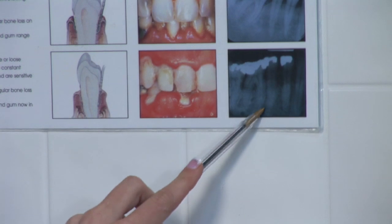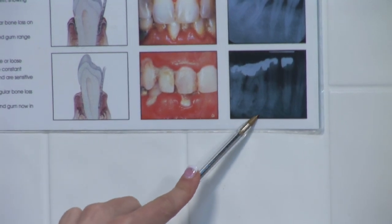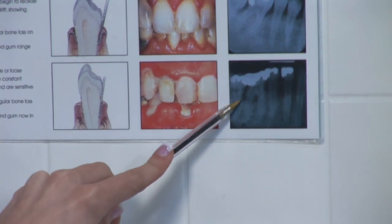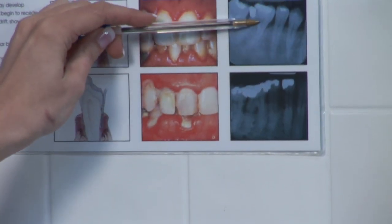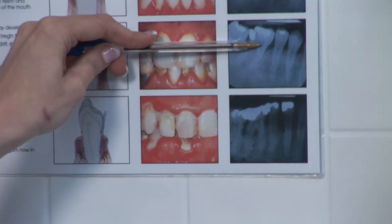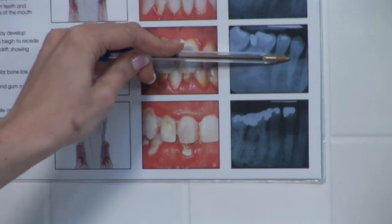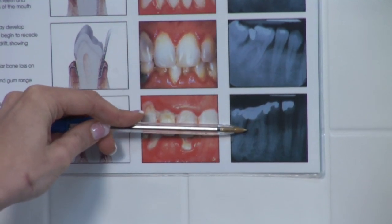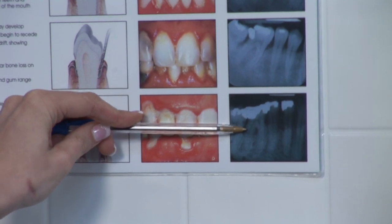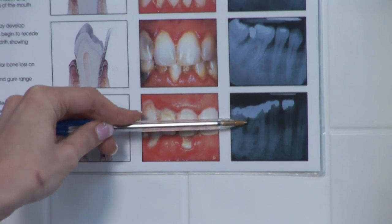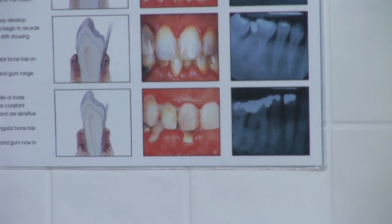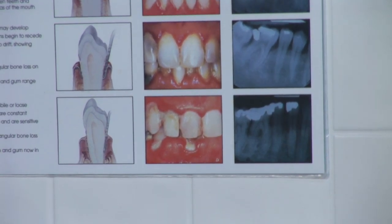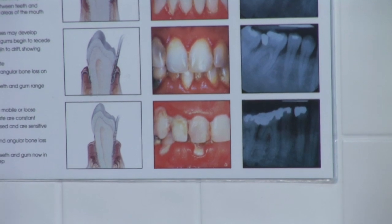From this x-ray over here you can actually see there is severe bone loss. With moderate periodontitis the bone level has receded, but with advanced periodontitis you're losing severe bone. If you don't have enough bone to hold your teeth in, they may eventually fall out or become very mobile and loose in the socket.